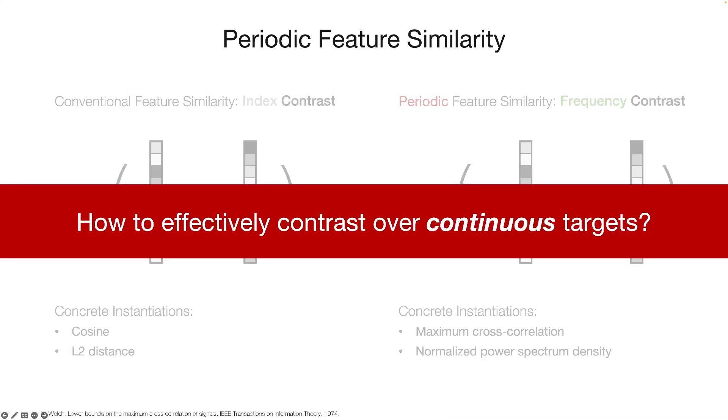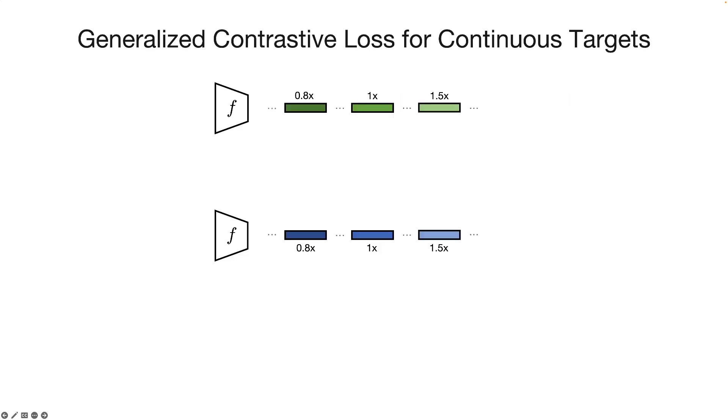Now, given the customized view generation and periodic similarity measures, how should we design an effective contrastive loss for periodic learning? Motivated by the fact that the augmented views are continuous in frequency, where the relative speeds of different samples are known through augmentation, we provide a simple generalization of the contrastive loss to continuous targets.